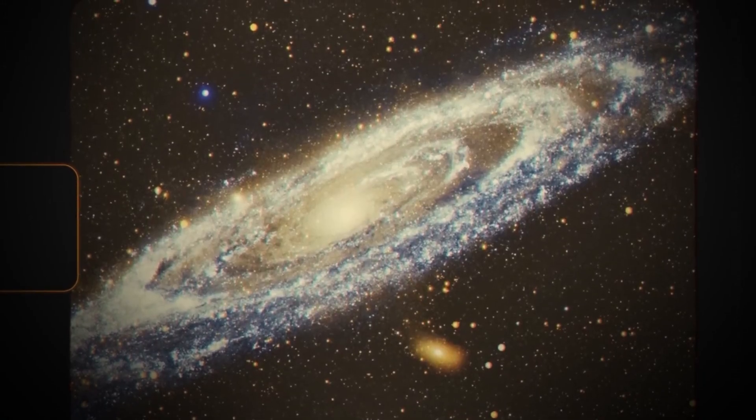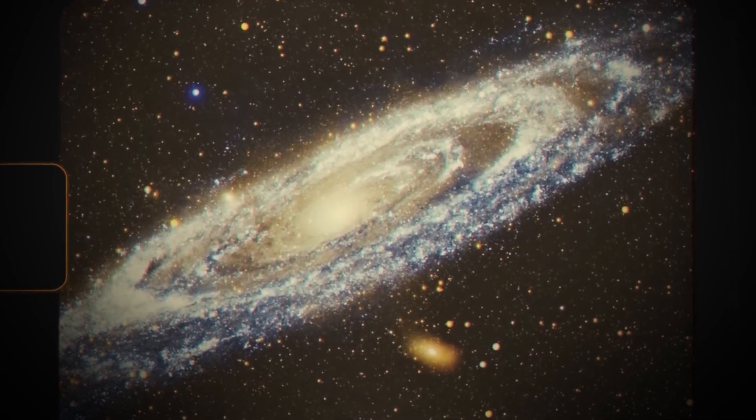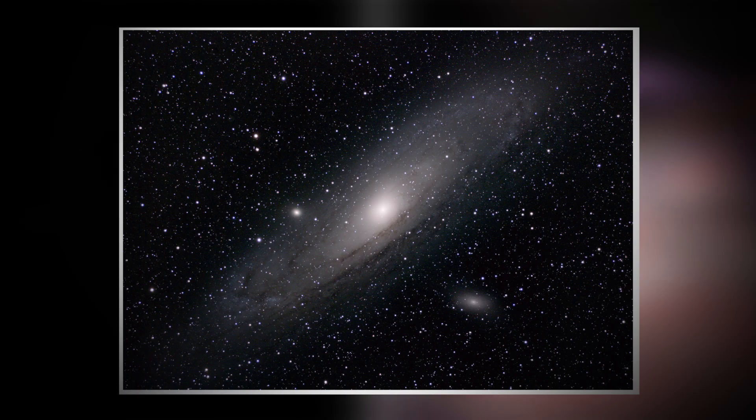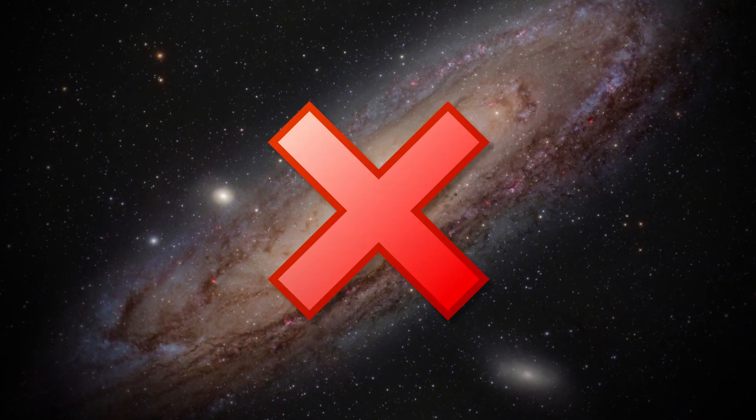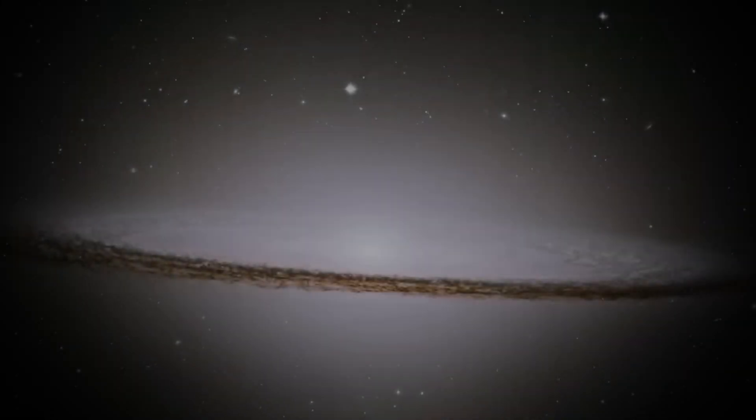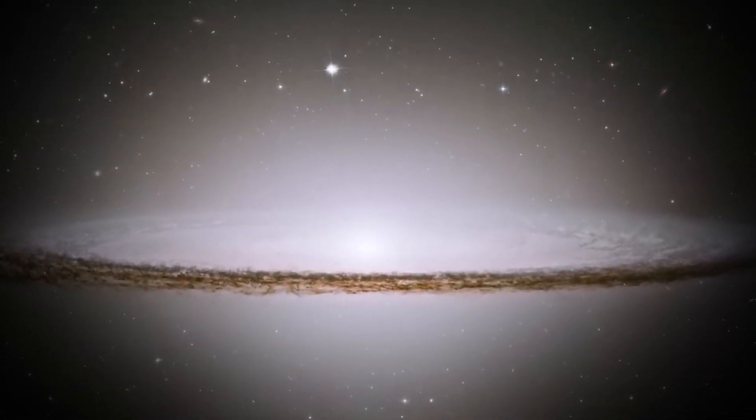He discovered that the nebulas at a great distance, which were formerly thought to be of the Milky Way, were in fact separate galaxies. Andromeda, or M31, was one of the galaxies looked at. Andromeda is not just any galaxy. It's the closest galaxy to us and has been viewed for ages.